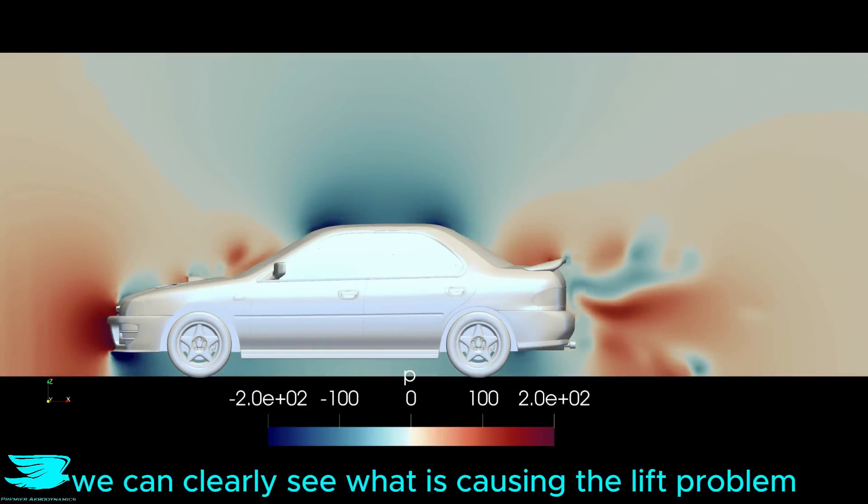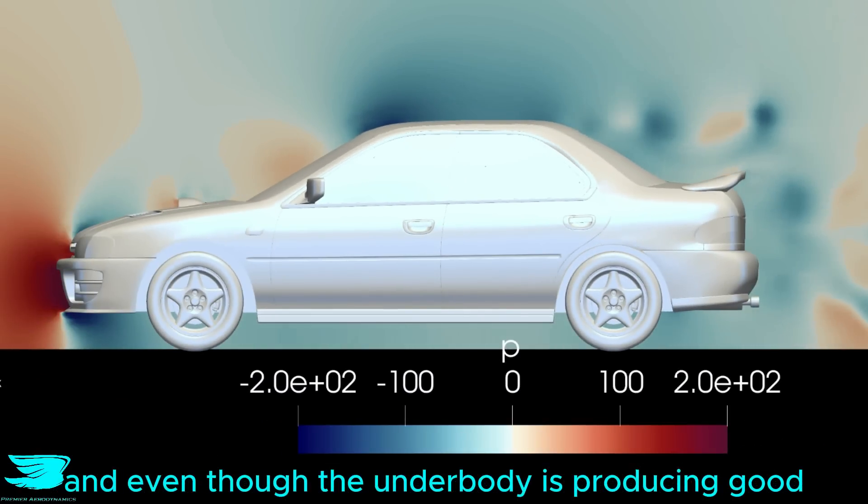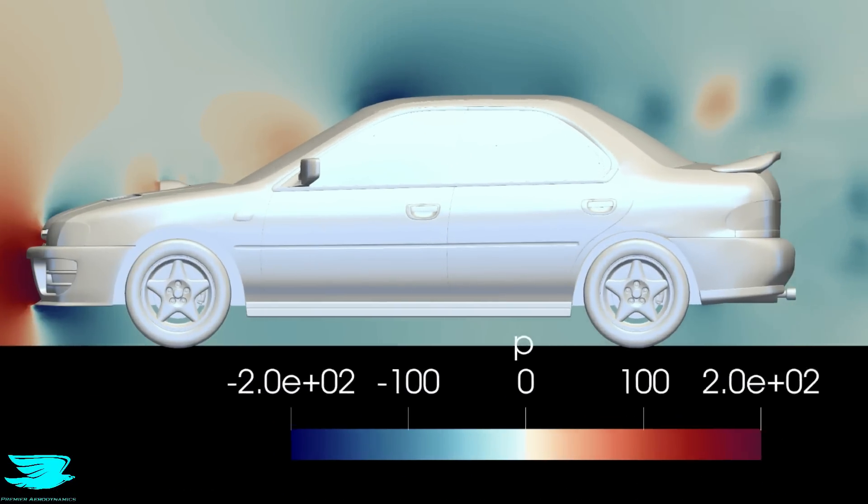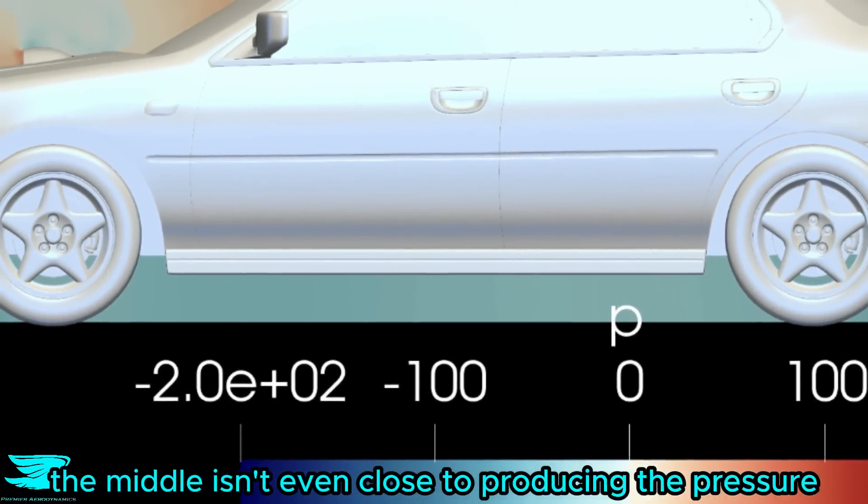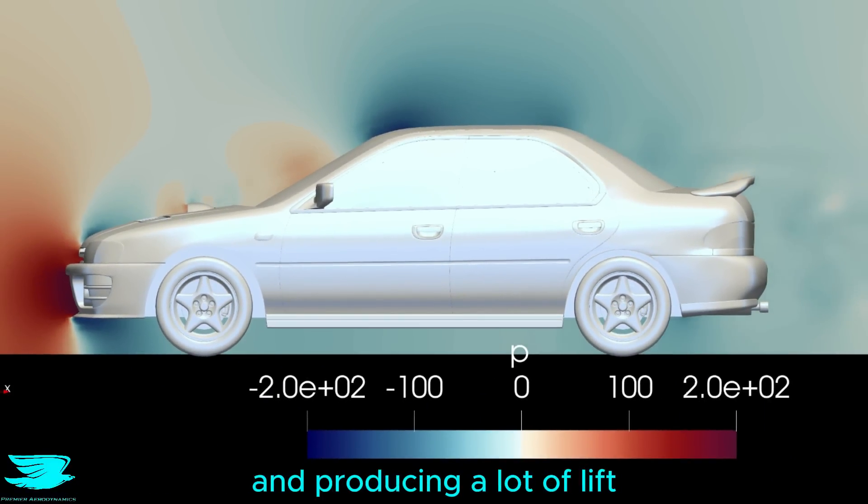From this pressure plot, we can clearly see what is causing the lift problem with this car. There is very low pressure over the roof, and even though the underbody is producing good low pressure at the front and back, the middle isn't even close to producing the pressure the roof is seeing. So naturally, the roof is acting like a wing and producing a lot of lift.